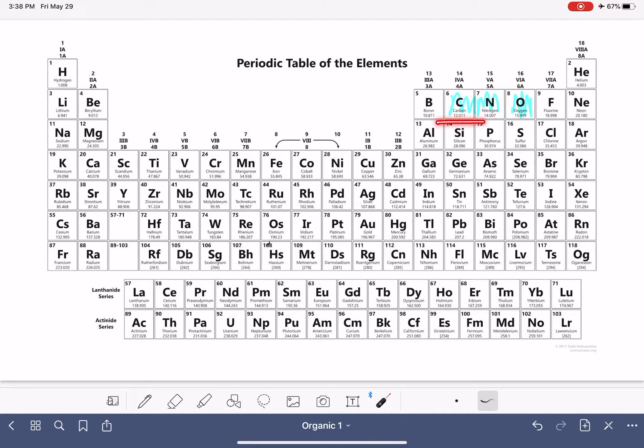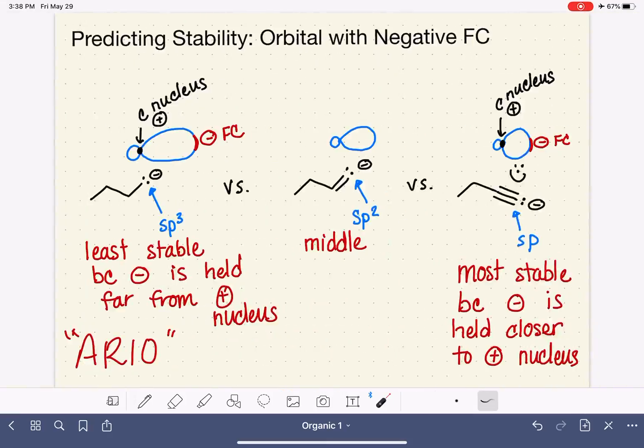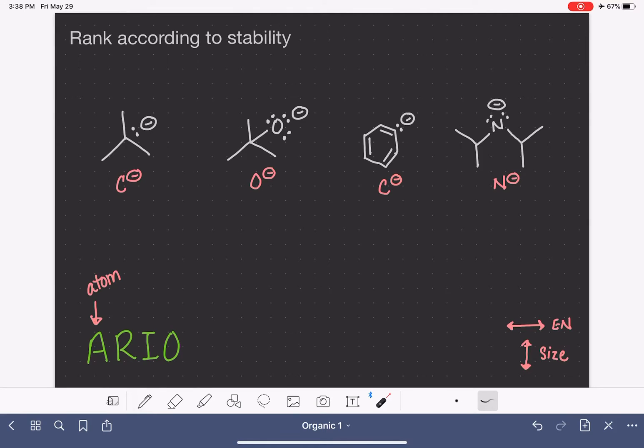The most electronegative of these is going to be the best at holding a negative formal charge. So oxygen is going to be the best at holding the negative formal charge, which means it's the most stable. And then nitrogen and then carbon is last. So that means our molecule with an O negative formal charge is the most stable. Let's give it the number one for these four molecules.